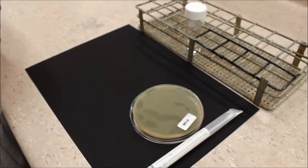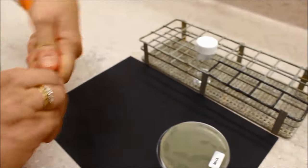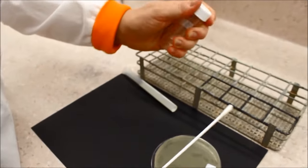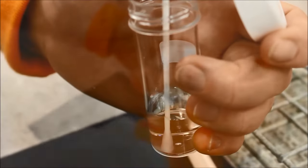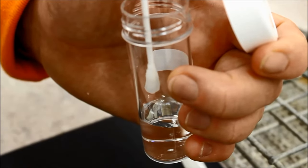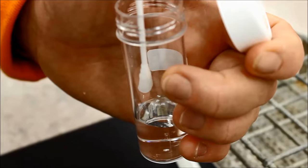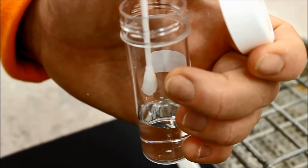Swabbing a plate and applying an e-test. Soak a sterile swab in a diluted bacterial culture and press against the inner wall of the tube to remove excess fluid.